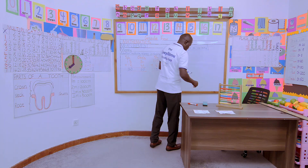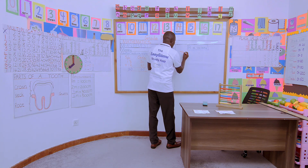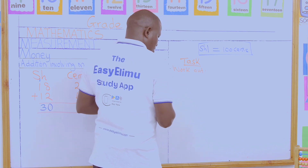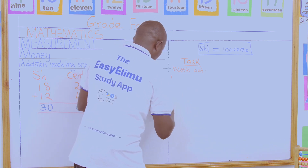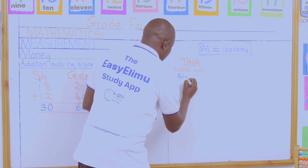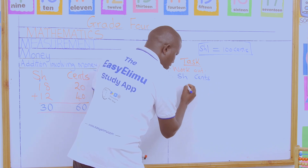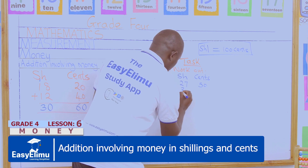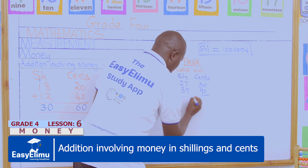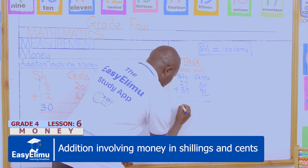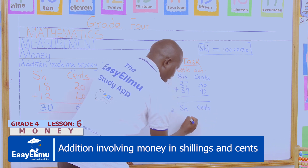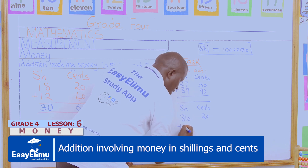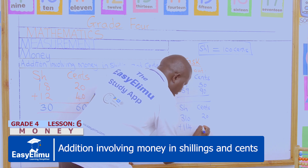Let us try to solve this task. Number one: we have 27 shillings and 50 cents, we are adding 39 shillings and 90 cents. Number two: we have 310 shillings and 20 cents, adding 114 shillings and 80 cents.